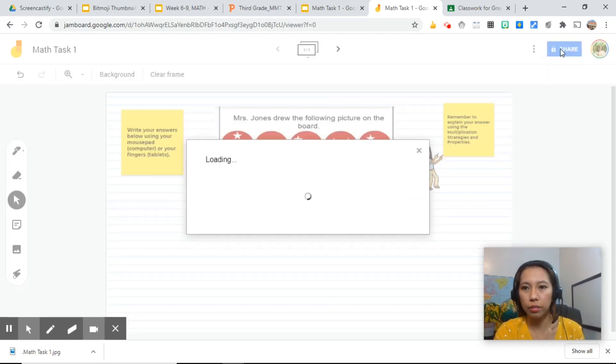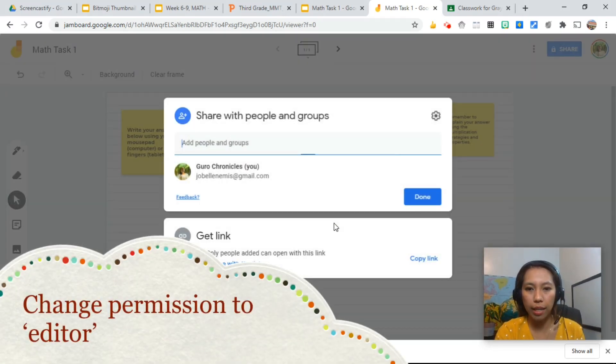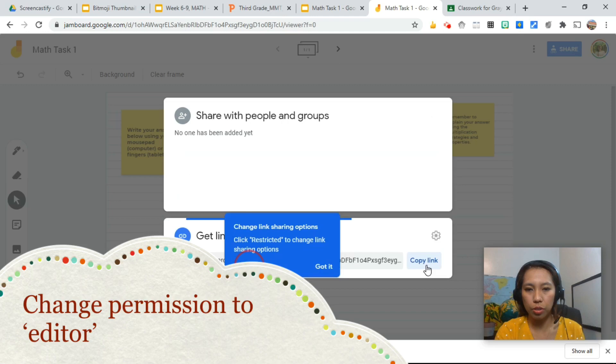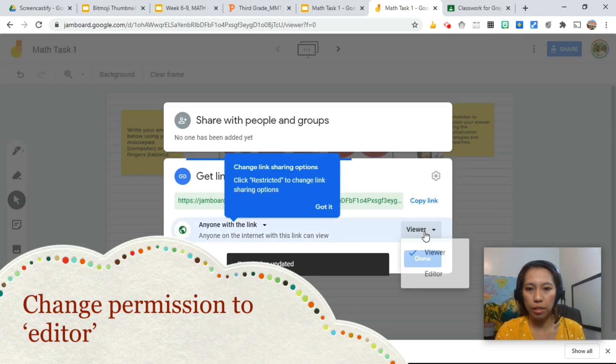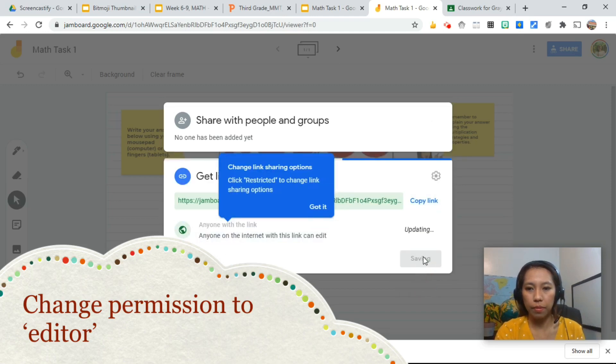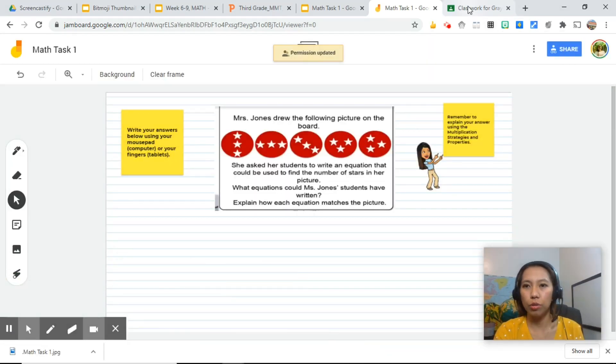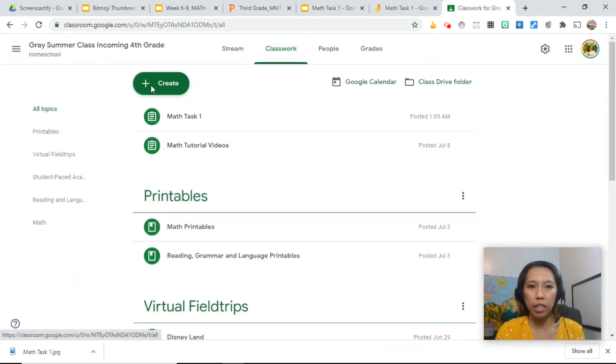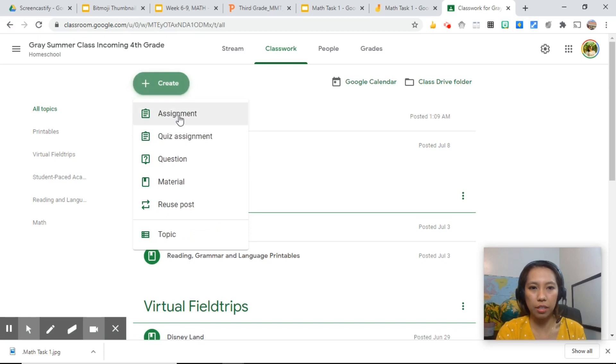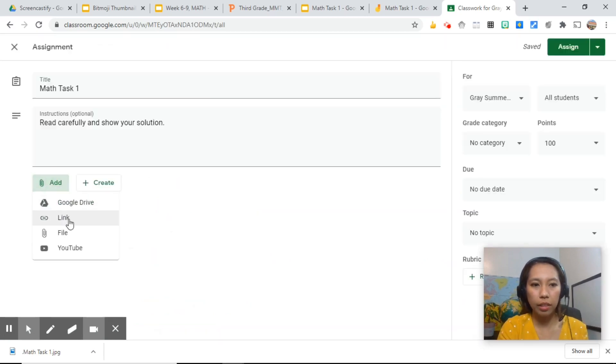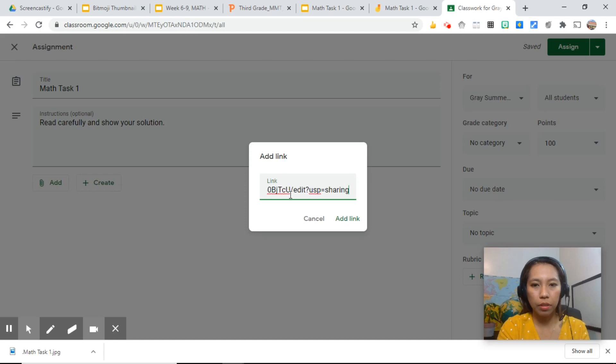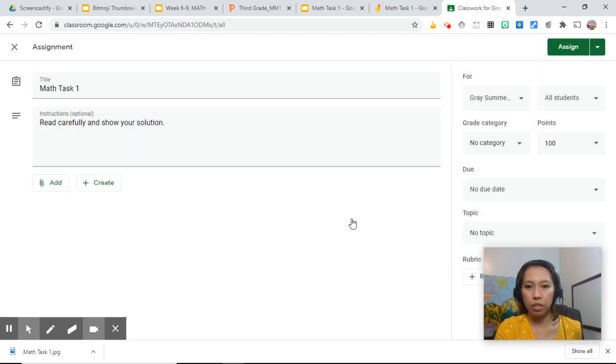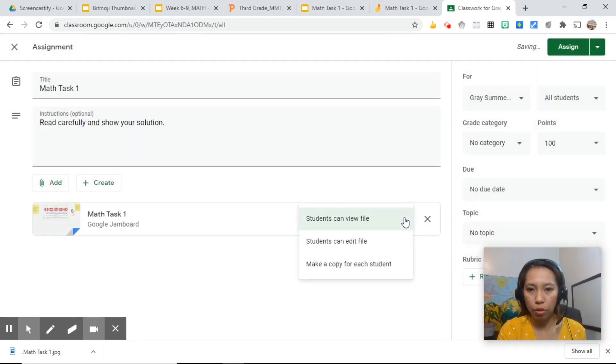Click share and make sure to change the setting into anyone can edit. Change to editor. Done. Go to your Google Classroom and create a new assignment. Add the link that we have copied a while ago and assign this to all your students individually. Make a copy for each student and assign.